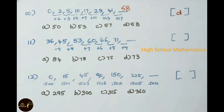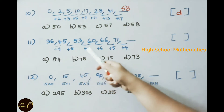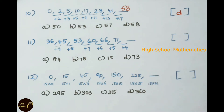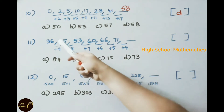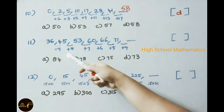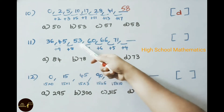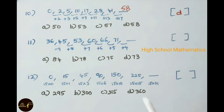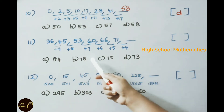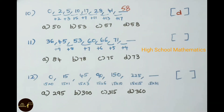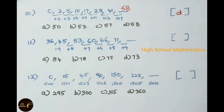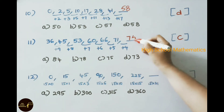Eleventh practice problem: 36, 45, 53, 60, 66, 71 — find the next term. Observe: 36 plus 9 is 45, 45 plus 8 is 53. The differences are in decreasing order: plus 9, plus 8, plus 7, plus 6, plus 5. The next difference is plus 4, so 71 plus 4 is 75. The answer is option C, 75.